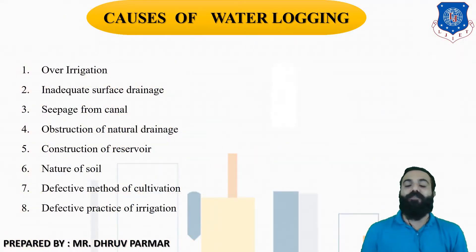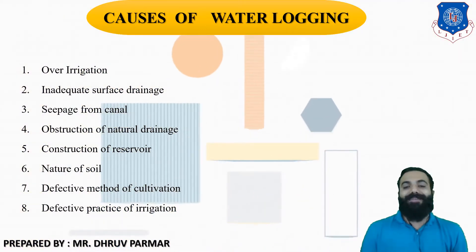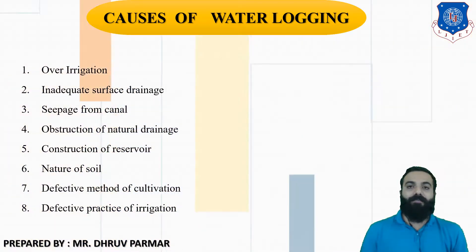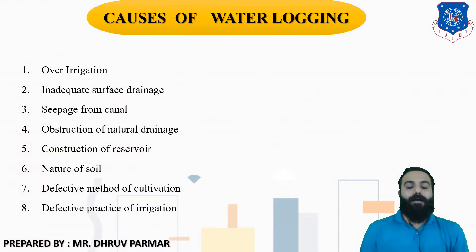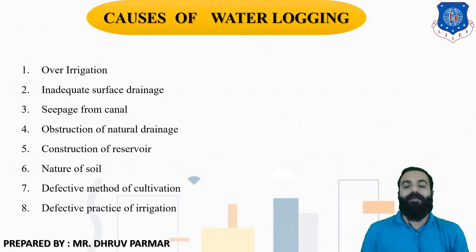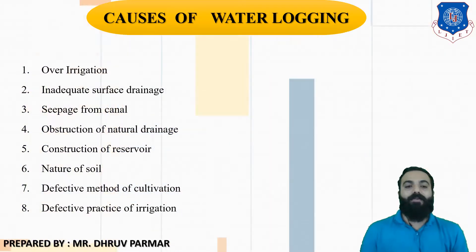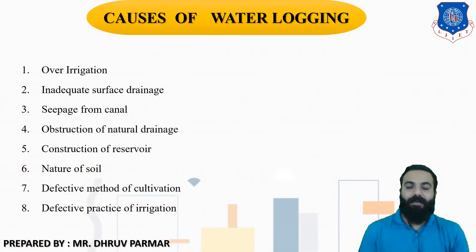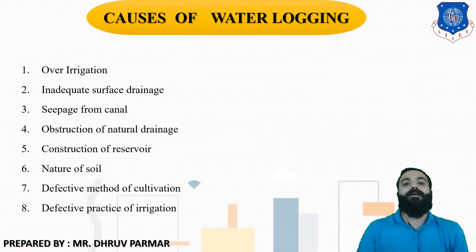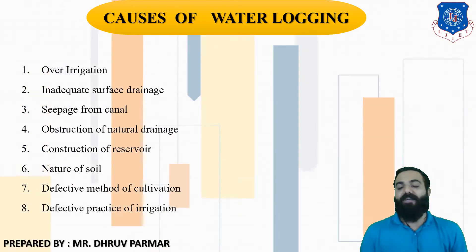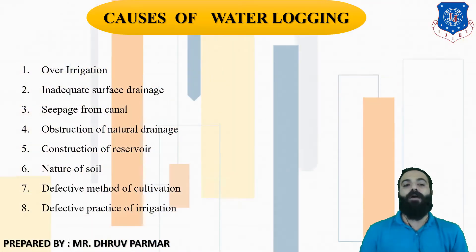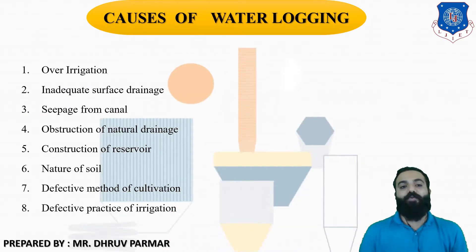The fourth cause is obstruction of natural drainage. Natural drainage means rivers or natural channels. When objects are placed obstructing the flow of a river or channel, obstructions occur and the water percolates into the ground, raising the water table, and the pores and voids fill with water.